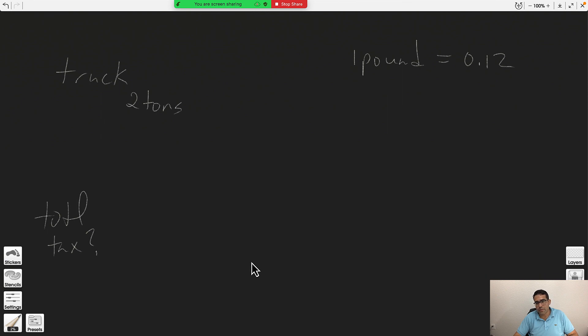Okay, so first thing you should notice is that here you have pounds and here you have tons. So you can't compare pounds and tons. If they charge you at 12 cents for every pound, we need to figure out how much is two tons in pounds. So the first thing is changing the two tons to pounds.